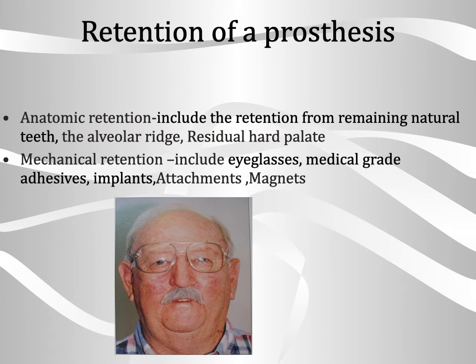Retention of prostheses can be divided into anatomic retention and mechanical retention. Anatomic retention includes retention from remaining natural teeth, the remaining alveolar ridge, and the residual hard palate. Mechanical retention includes eyeglasses, medical-grade adhesives, implants, attachments, and magnets.